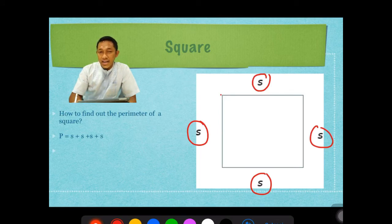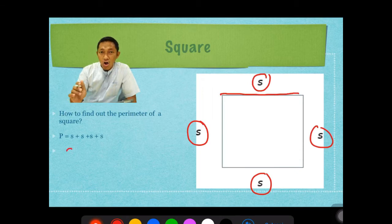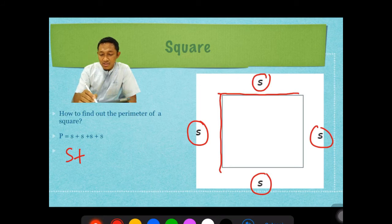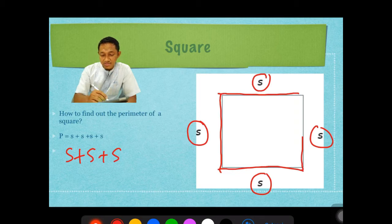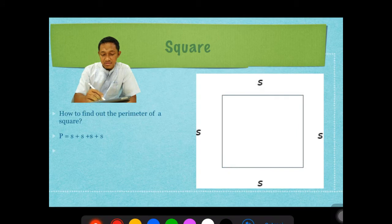Remember, semua sisi dari square, from square, is the same. Square always has the same sides. Panjangnya sama. For the example, S is the side of the square. Ini sisinya, simbolnya S. So there are four S, ada empat sisi, four sides. How to find out the perimeter of the square? Just add all of the sides. Dijumlakan aja semuanya. This one, S, plus this one, plus S, plus this one, and the last one.